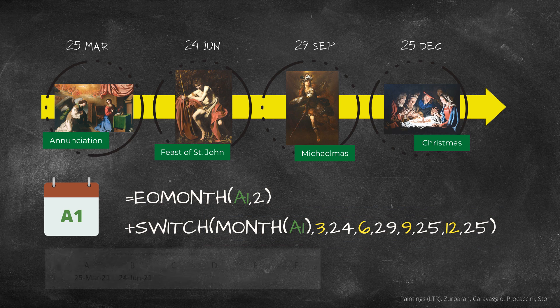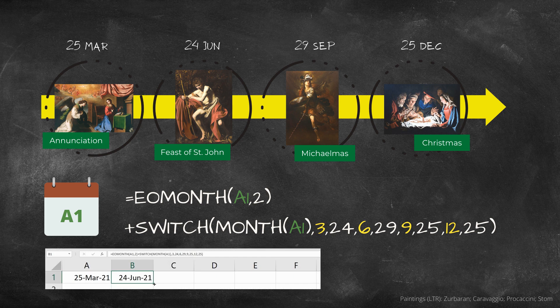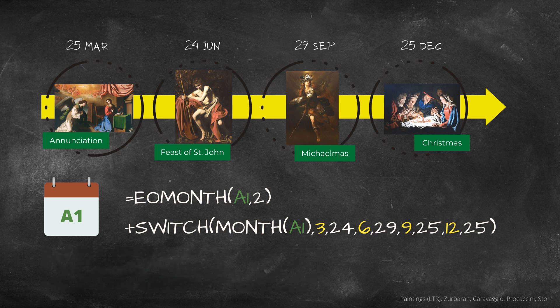To create a quarter day series, simply copy the formula to the end of the cash flow. Once you've created the next quarter day formula once, you never have to create it again. You can just copy and paste it wherever you need it.